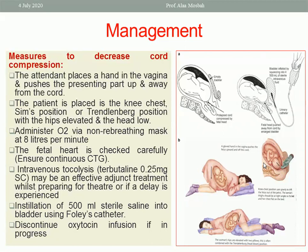Give the patient oxygen at 8 litres per minute — this is very important. Continuous CTG monitoring is also important. You can also instil saline inside the bladder through a Foley catheter — 500 millilitres — because this full bladder will push the presenting part away from the umbilical cord.